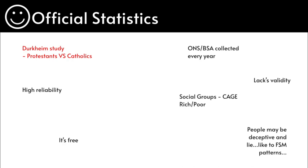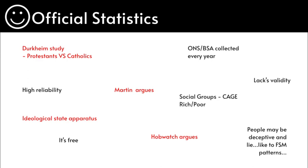Durkheim studied Protestants versus Catholics and found that Protestants who were unmarried and wealthier were more likely to commit suicide compared to Catholics who were married and poorer. This is linked to Martin and Hobsbawm, who both argue that the cause of disease at that time was unknown and raw abnormalities were not taken into account either. How reliable and valid can that data be? Also, the ideological state apparatus links to social groups and CAGE — ideologies from places like the media can actually determine official statistics as a whole.